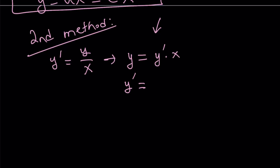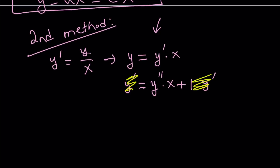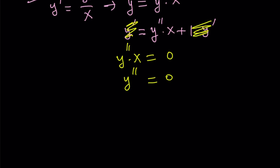When we differentiate y we get y prime, and differentiating y prime gives y double prime, the second derivative. Using the product rule: the derivative of y prime times x is y double prime times x, plus the derivative of x (which is 1) times y prime. So we have y prime on both sides — y prime cancels out, leaving y double prime x equals zero. Since x cannot be zero, y double prime must be zero. Integrating once gives y prime equals a constant; integrating again gives y equals cx plus d.